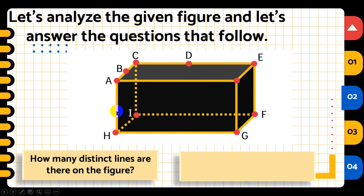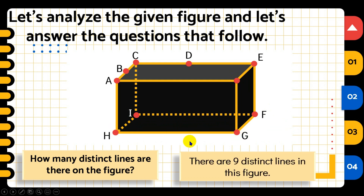The sixth line is point A and point H. Point G and an unnamed point cannot form a distinct line. The seventh line is point I and point H. The eighth line is point F and point G. The ninth and last line is point H and point G. So there are nine distinct lines in this figure.